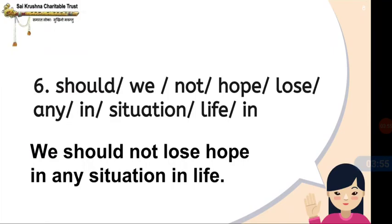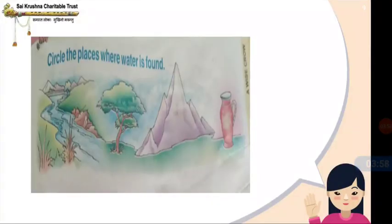Understood, children. Here is a picture — you can draw and colour it. And you have a clue: circle the places where water is found. You have to circle them.